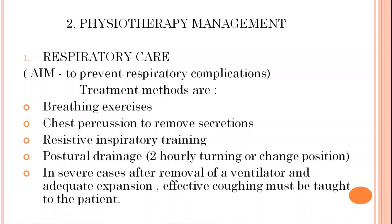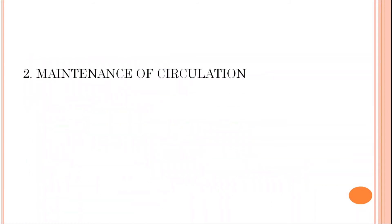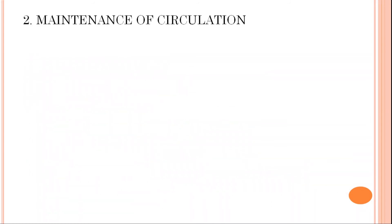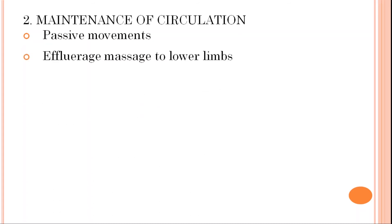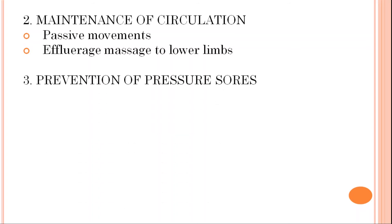In severe cases, after removal of a ventilator and adequate expansion, effective coughing must be taught to the patient. After respiratory care, maintenance of circulation is very important. For this, passive movements are given to every joint like wrist, finger, elbow, upper limb, and lower limb both. Next is effleurage massage to the lower limb.